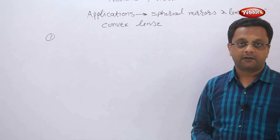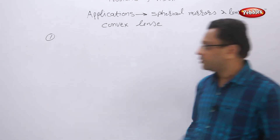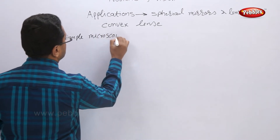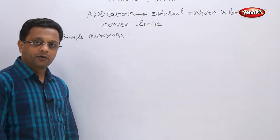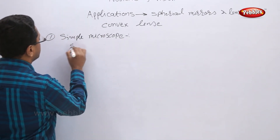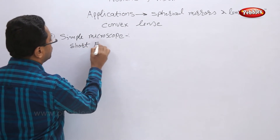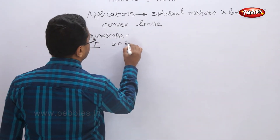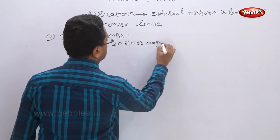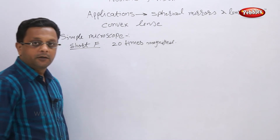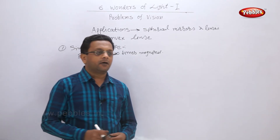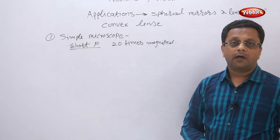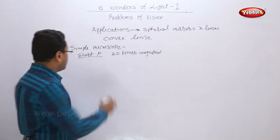Now let us see the applications of convex lenses. A simple application is the magnifying glass, also called the simple microscope. A convex lens of short focal length is used, and generally the image is about 20 to 24 times magnified. Watch repairers and jewellers commonly use these simple microscopes, which use a single convex lens.